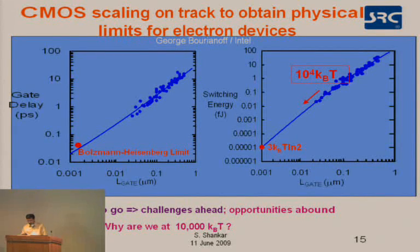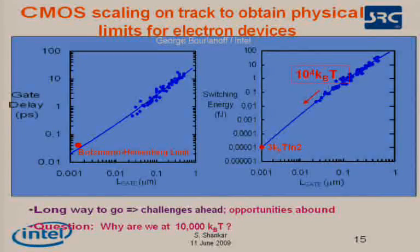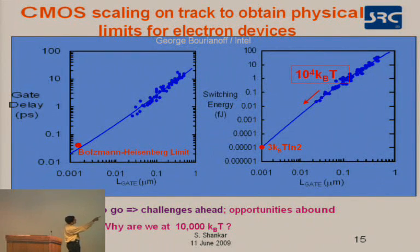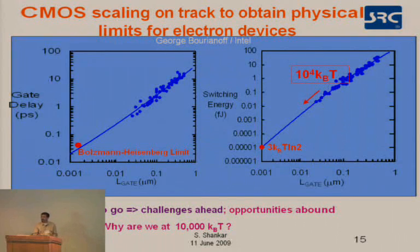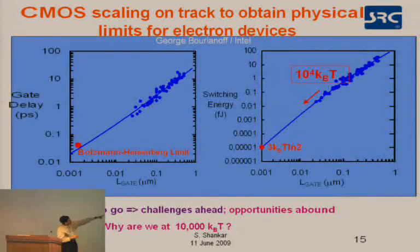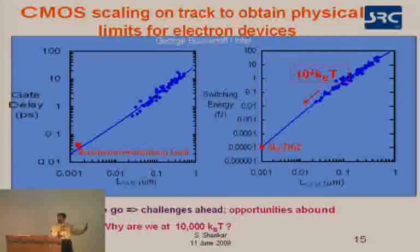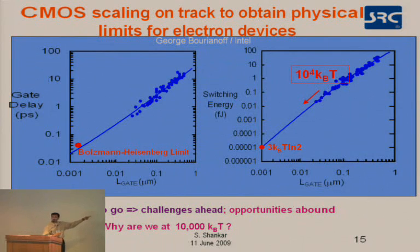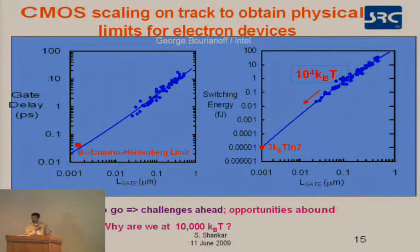This plot shows the gate dimension on the x-axis and switching energy and gate delay on the y-axis. All devices from Intel are clustered in the top right. The theoretical limit of 3 KBT or KBT log 2 is on the bottom left — the smallest device theoretically possible is at the lower limit. Real devices are on the order of 10,000 KBT, so there is a big gap. There could be an opportunity to close that gap. But the logical question is: why are we at 10,000 KBT, and if we can get down, why can't we get there now?